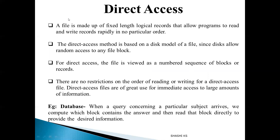The second type of access is direct access. Here, the file is assumed to be made up of fixed-length logical records, but the records can be accessed randomly in any order — there is no particular order required to read or write. Direct access is also called relative access, and it resembles a disk model of a file, because any record can be randomly accessed from any location.